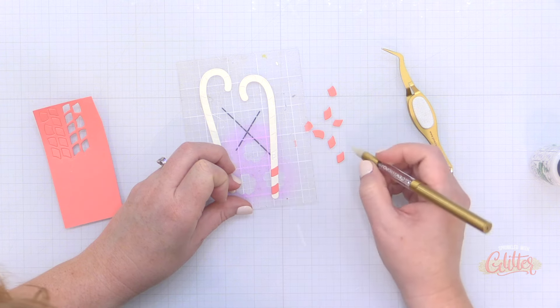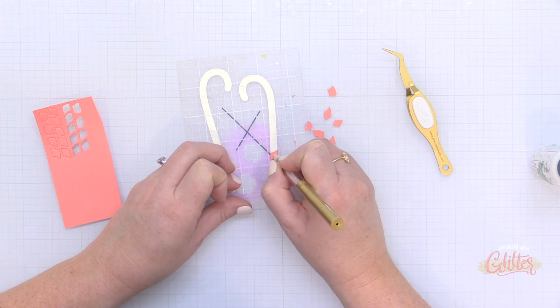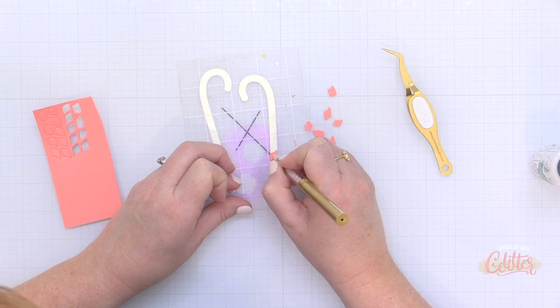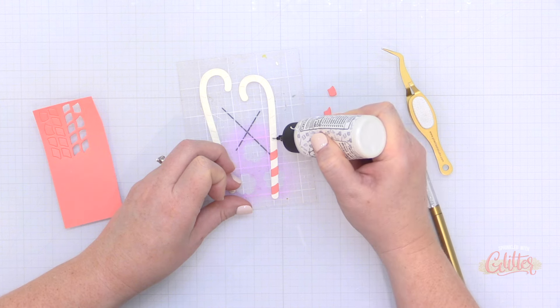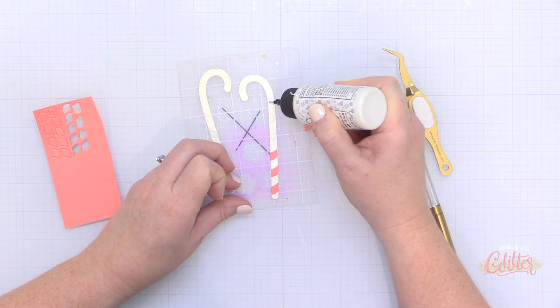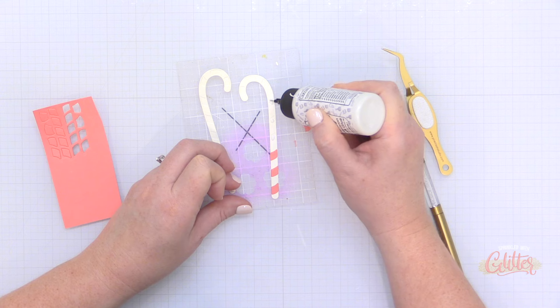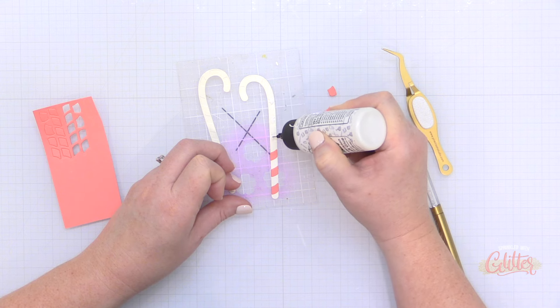Now when I'm adhering die cuts together like this, especially when there's some smaller pieces, I love to use my dual tipped embellishment tool from Pink Fresh Studio. You can see I have a little wax tip there that allows me to pick up these smaller die cuts and then just nestle them in where I need them.